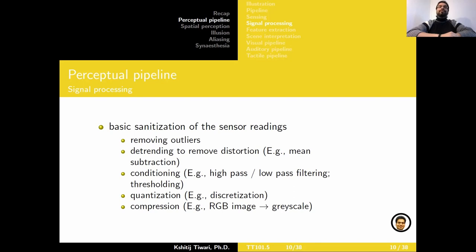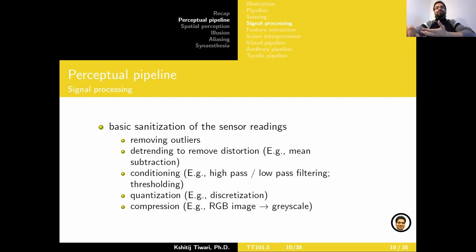Similarly, you could detrend the data if you have prior information that it might have some trends or correlations — removing the mean, etc. You could condition it by passing it through filters, adding thresholding, quantizing the data, or compressing the data, which is very commonly used for computer vision and image processing. Depending on what you want to do with a captured image, you may not need to process an ultra-high-definition image — you could compress it to grayscale if that's enough to make sense of the image. Signal processing, sometimes called pre-processing, is the basic sanitization of the data to prepare it for making context and processing down the perceptual pipeline.